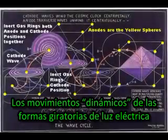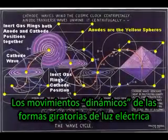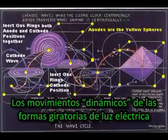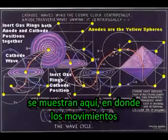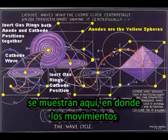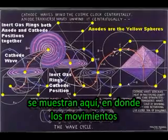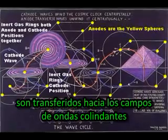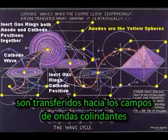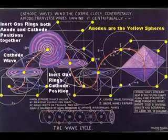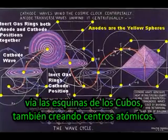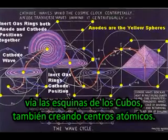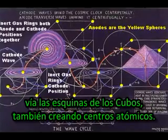The dynamic motions of the spiraling electric light forms are seen here, where the motions are transferred into neighboring wave fields via the corners of the cubes and create atomic centers there as well.